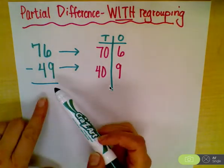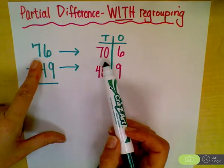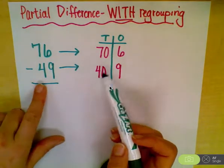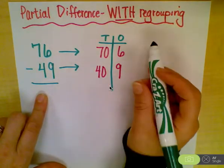76 minus 49, and our T-chart over here tells us there are 7 tens, which equals 70, and 6 ones, and 4 tens, which equals 40, and our 9. Nothing's changed there.